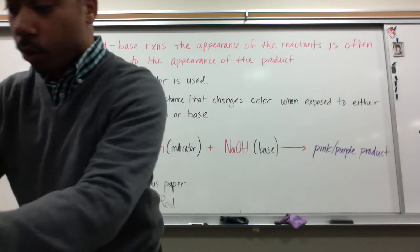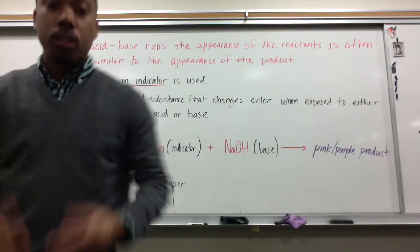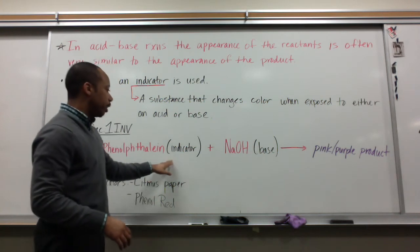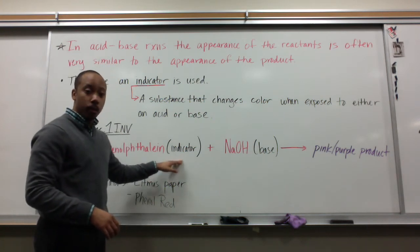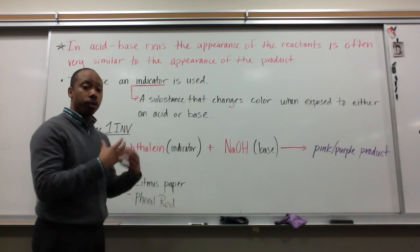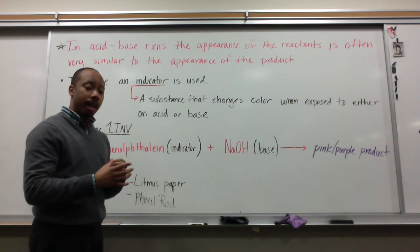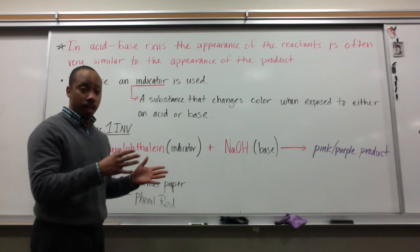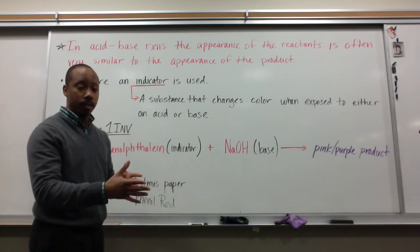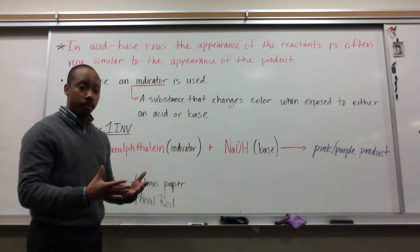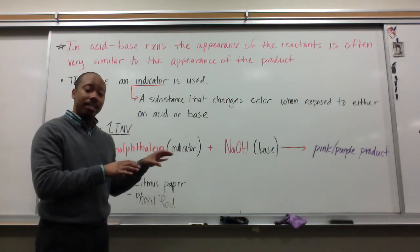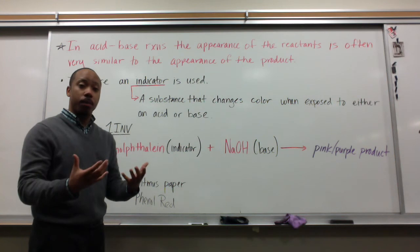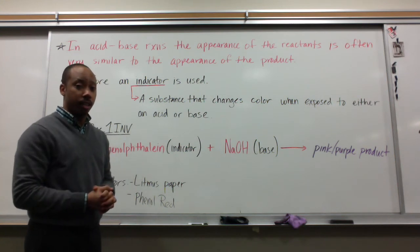You saw this in the laboratory when we did it the first time. That happens because phenolphthalein is an indicator — it will change the color of the solution when it comes into contact with an acid or a base. In this case, when it comes into contact with a base, it turns purple. So you would put phenolphthalein in an acid, and then when that acid reacts with the base, it turns purple, so you know that reaction actually did occur.